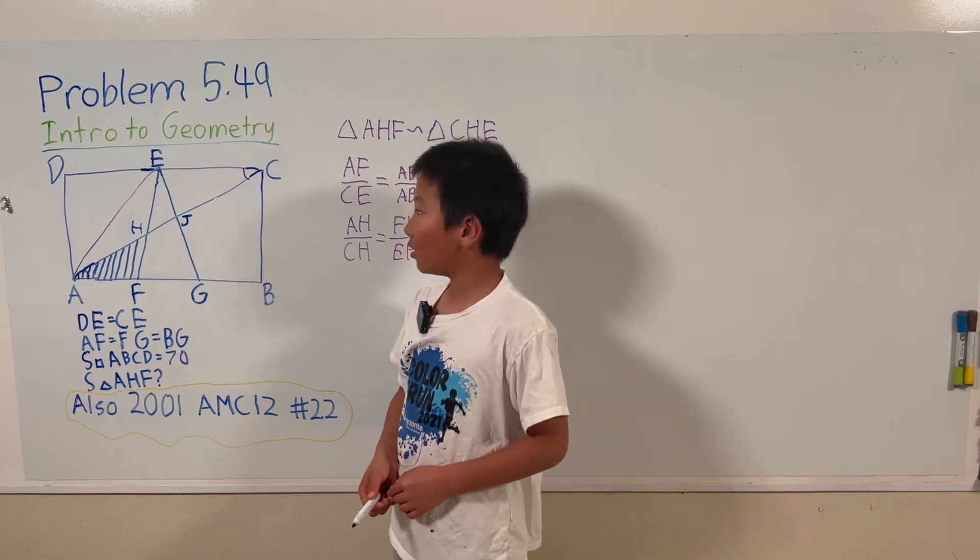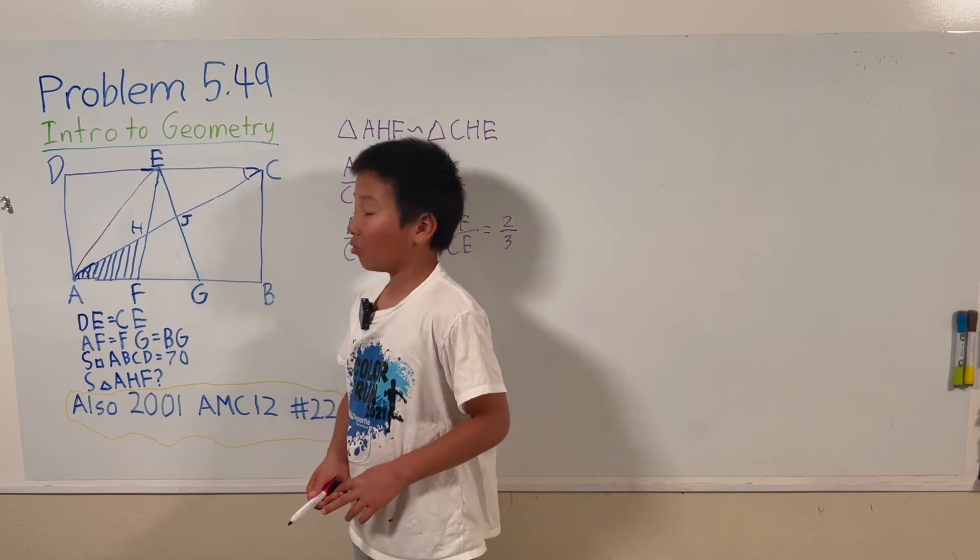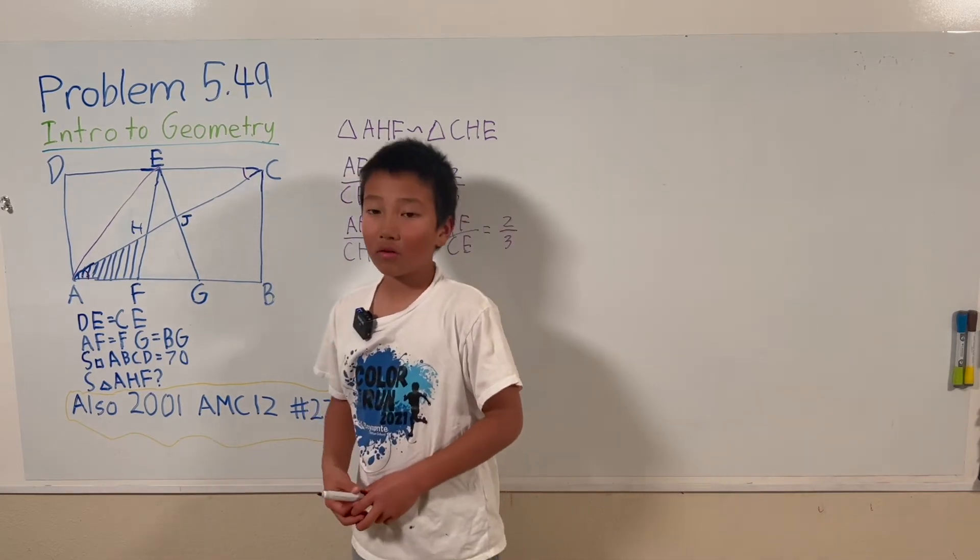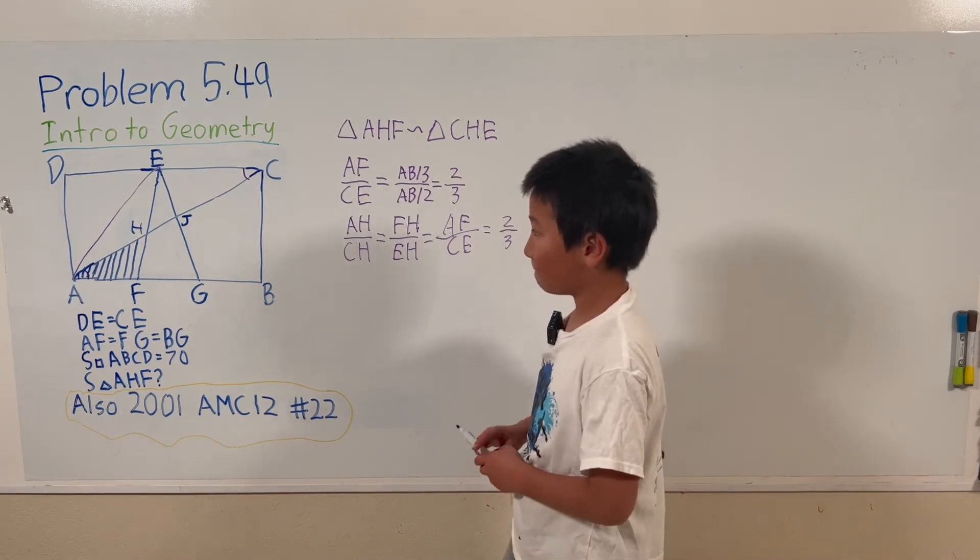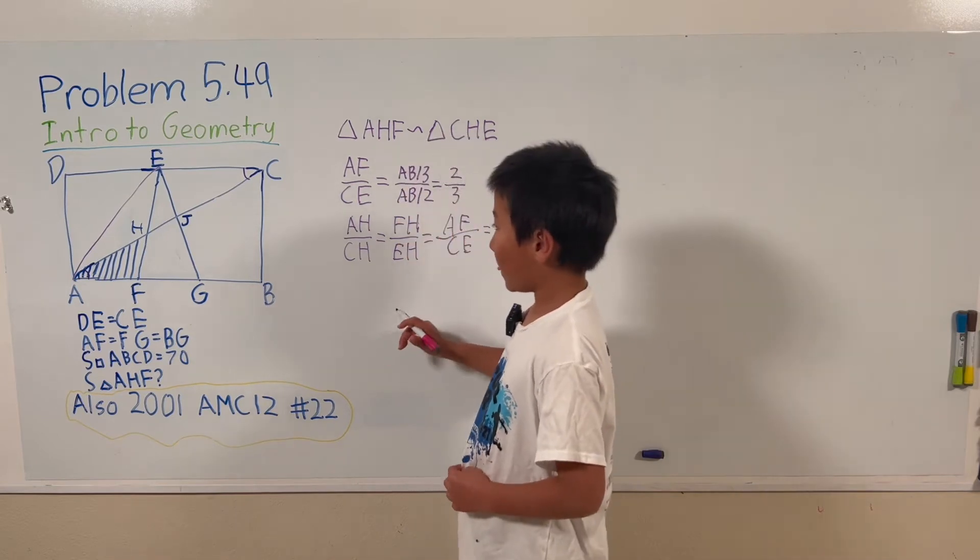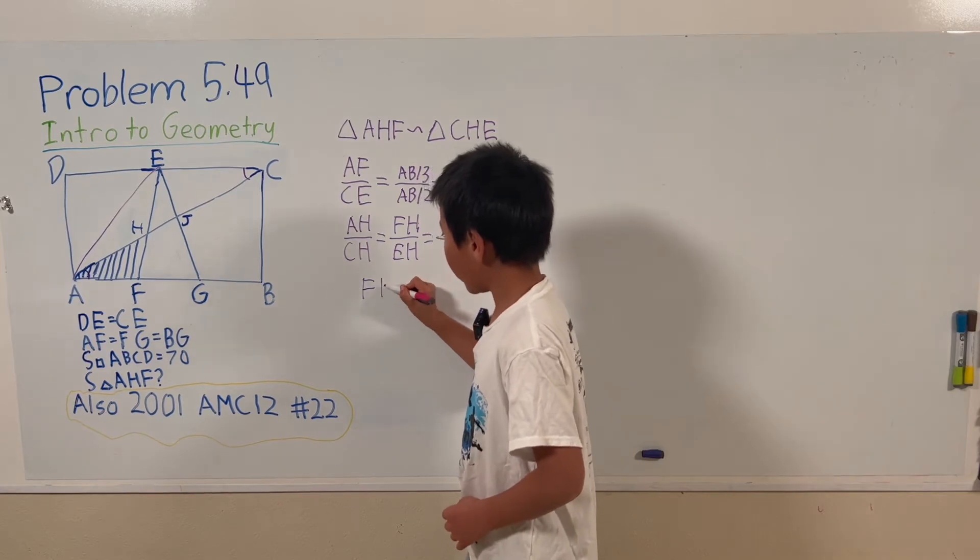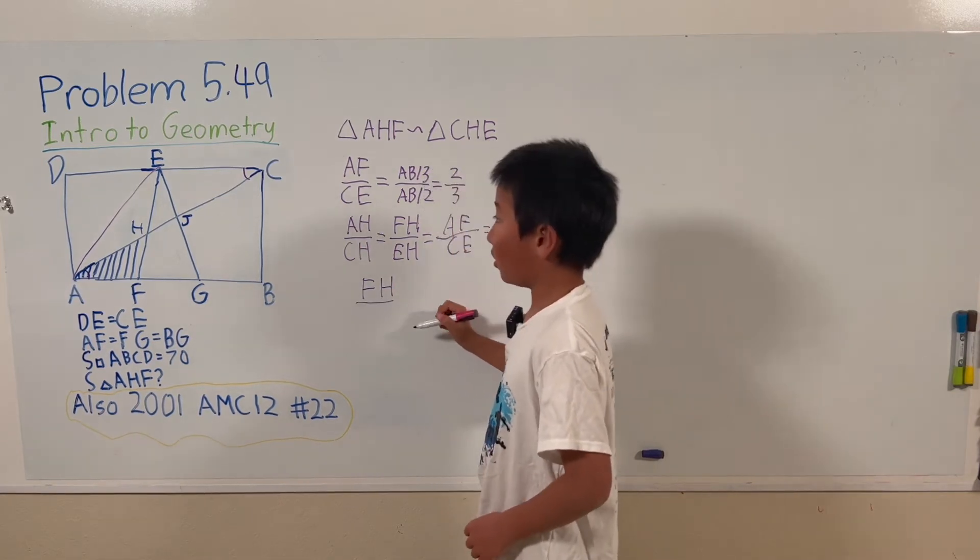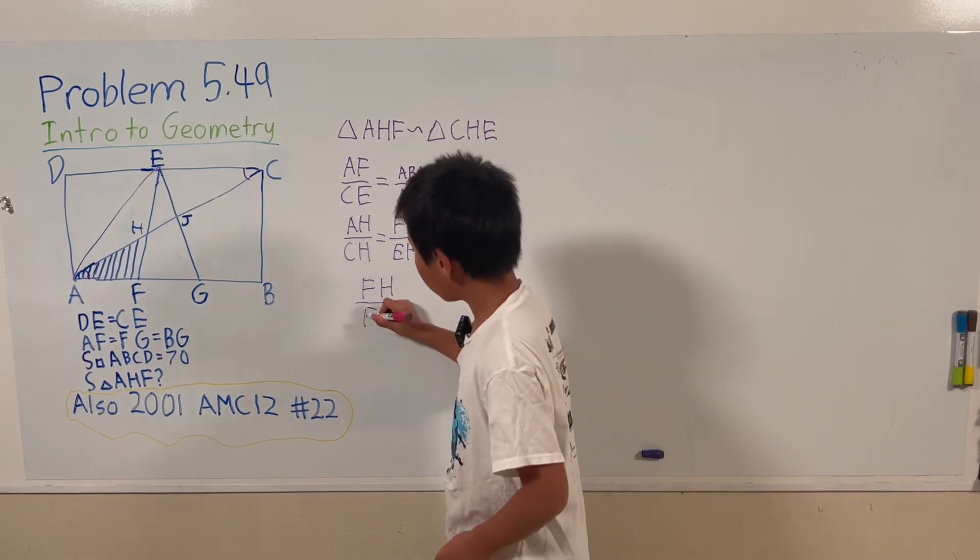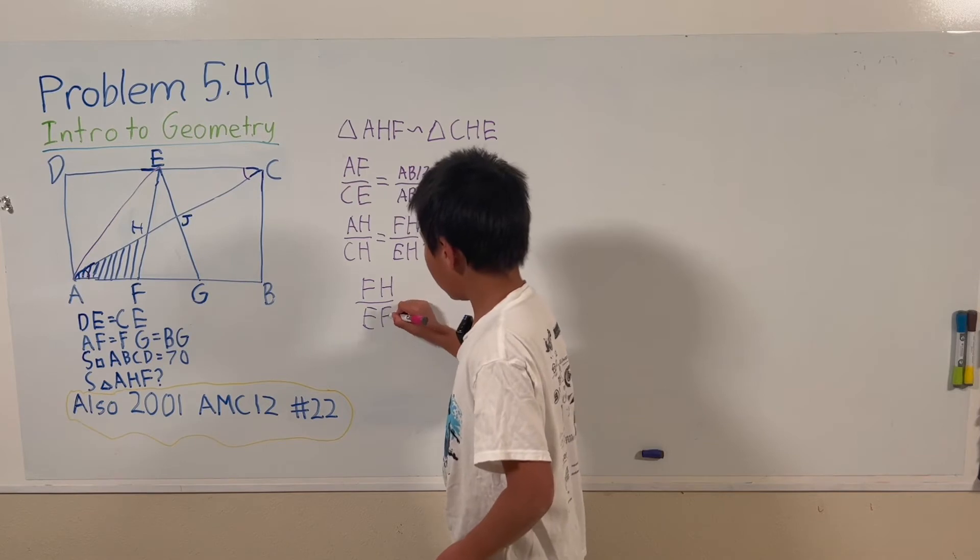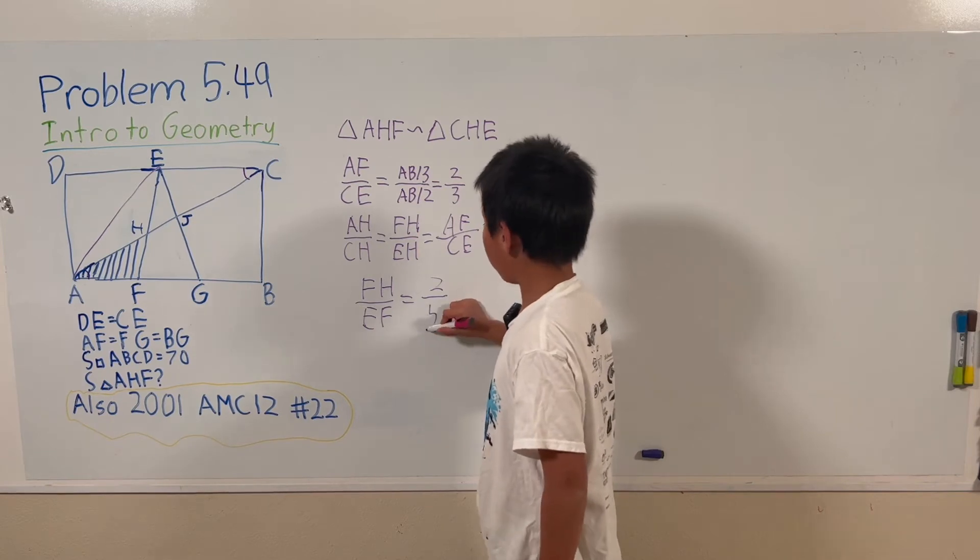So we only need to find the ratio of their bases to find what is the ratio of their areas. So FH over EF. This equals to 2 over 5.